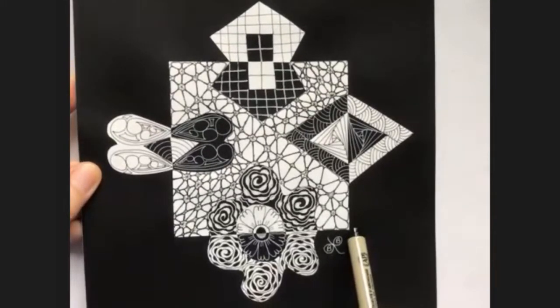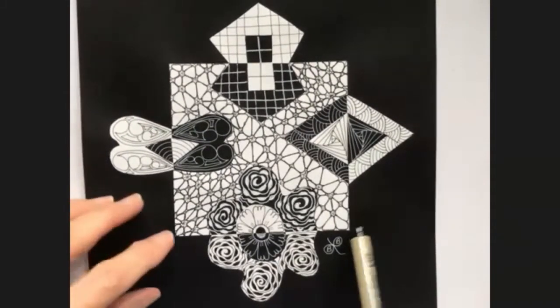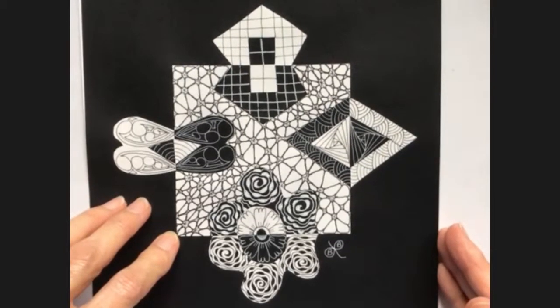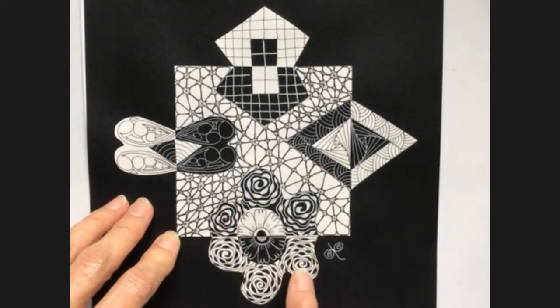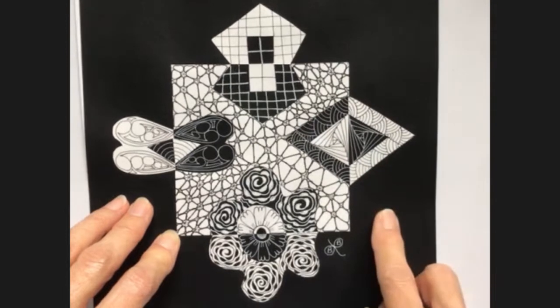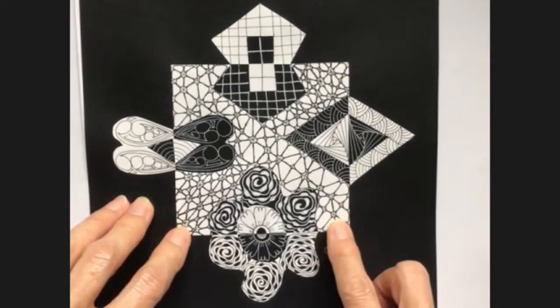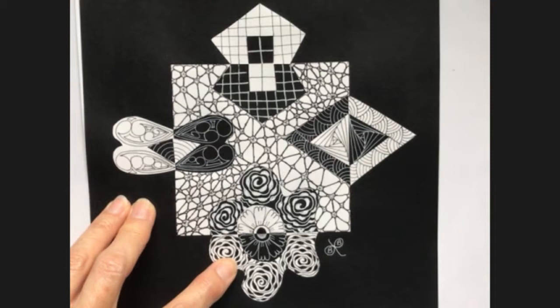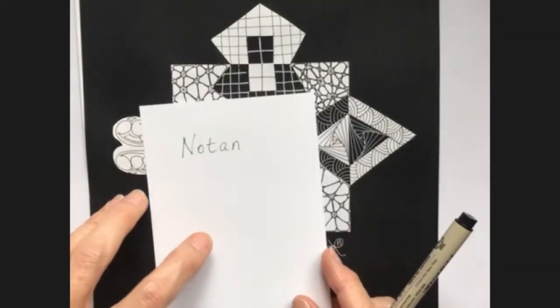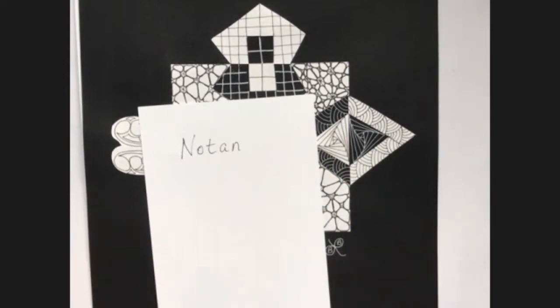This is one that I did when I was taking a class from the first CZT that I met, which was Victoria McMillan. I did a black background with a white piece of cardstock and made some different kind of edges and flipped them and glued them down. If you look and do a search for Notan tutorials, you can find some that explain exactly how to do this.